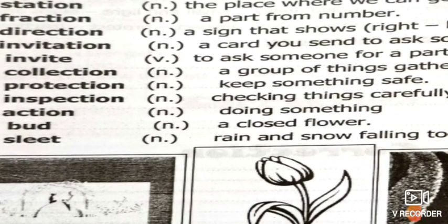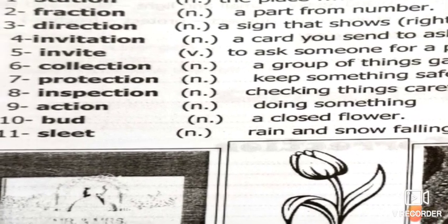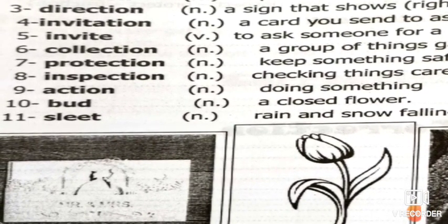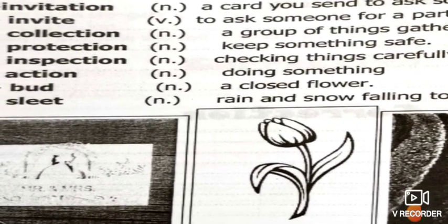Number seven: 'protection' — keep something safe. Number eight: 'inspection' — checking things carefully, like looking at your booklet to see if you did your homework. This is called inspection.